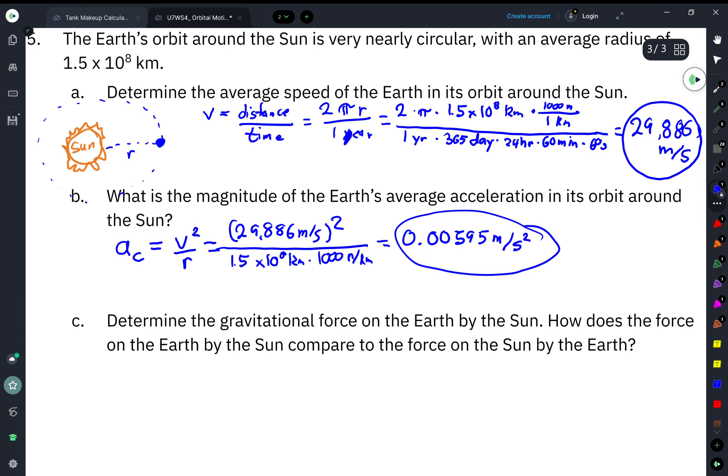Now, the last part, part C, we're trying to figure out the gravitational force on the earth by the sun. In order to do so, we're going to need to quantify that force of gravity. Now, while we could use the universal law of gravitation, Fg equals mass 1 times mass 2 times the gravitational constant divided by the radius squared, we don't actually have the mass of the sun in this problem, so we can't end up using that.